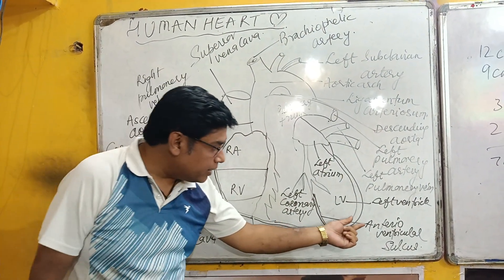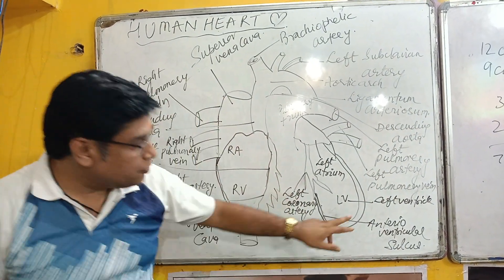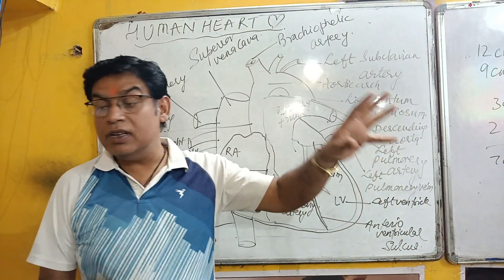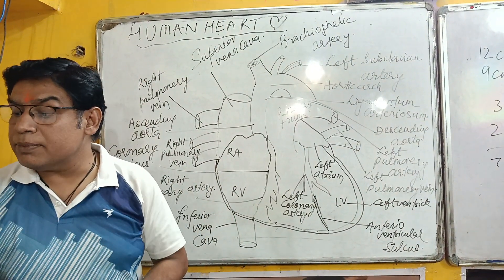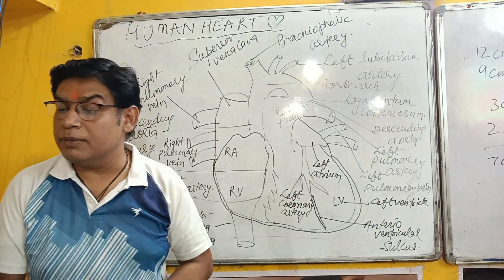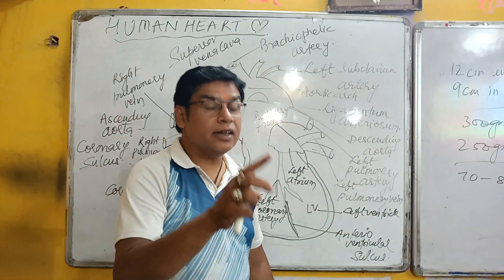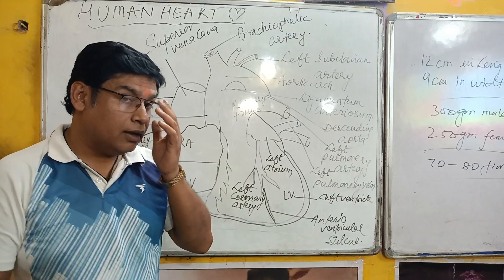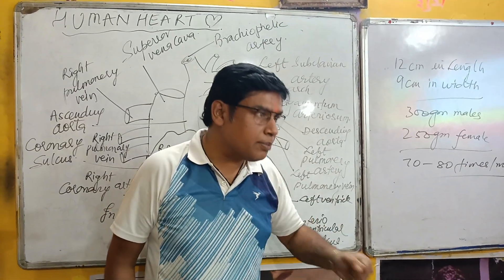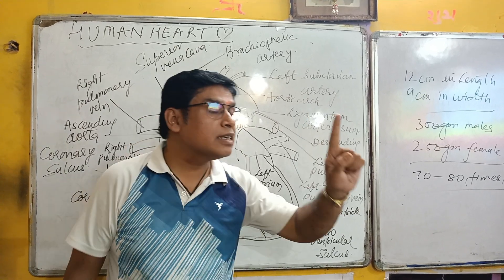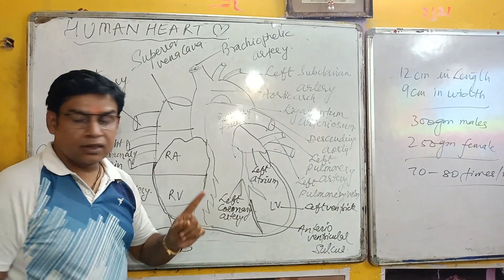The pericardial cavity is filled with pericardial fluid. This fluid acts not only as a lubricant but also as a shock absorber. It also reduces friction between the walls of the heart.